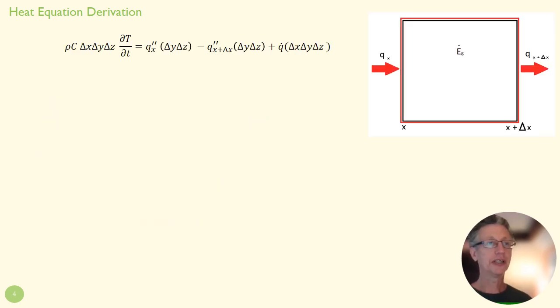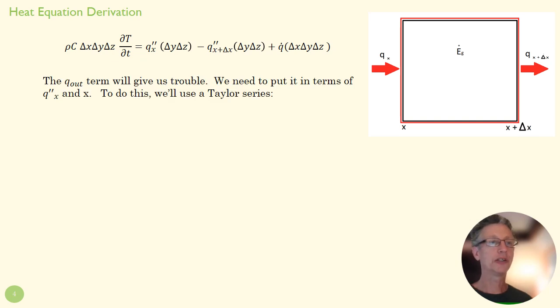So we end up with this and we want to try to simplify that. That q_out term right here is going to be problematic because we don't know exactly what to do with this plus Δx here. To figure out what the difference between q_x and q_(x+Δx) is, we're going to use what's called a Taylor series.